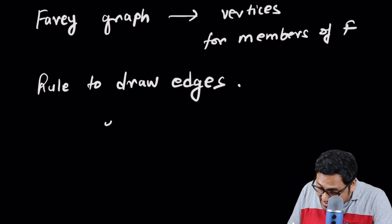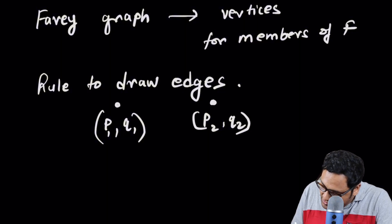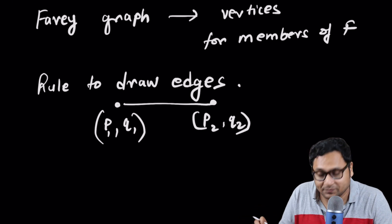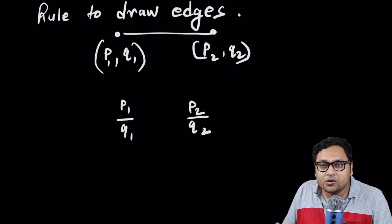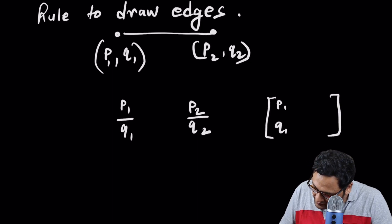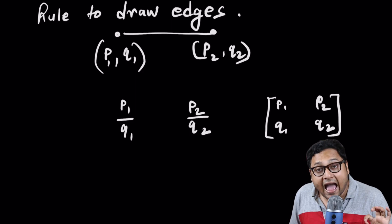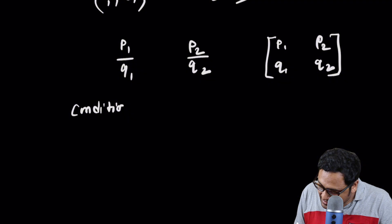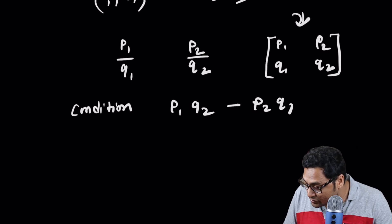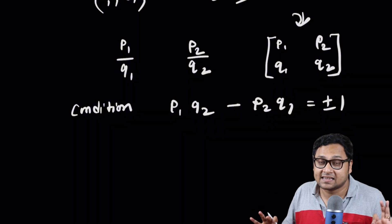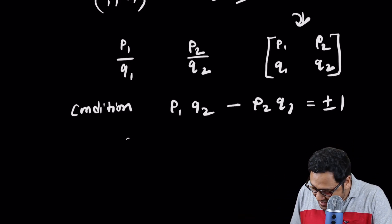Now, how do we draw the edges? Here is a rule to draw edges. You will join P1, Q1 and P2, Q2. You will join these two points using an edge if something special happens. And what is the special thing? You can think about this as a fraction or you can think about this as a matrix. There are multiple ways to think about the same thing, the pair of points that I'm talking about. And the condition is this: P1, Q2 minus P2, Q1, that is the determinant of this matrix, is equal to plus or minus 1. If this happens, then you join P1, Q1 with P2, Q2. That is the edge relationship.